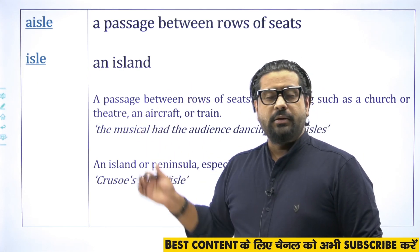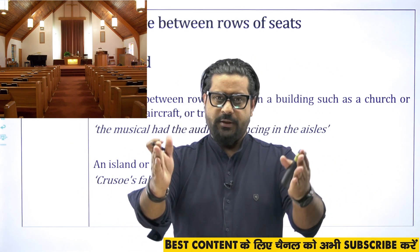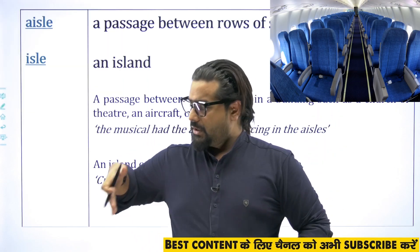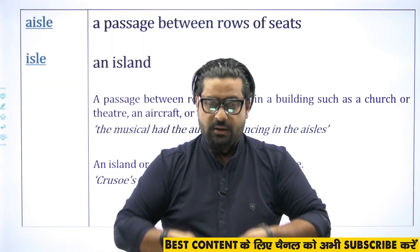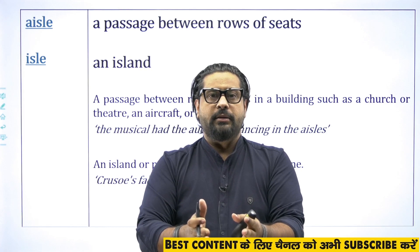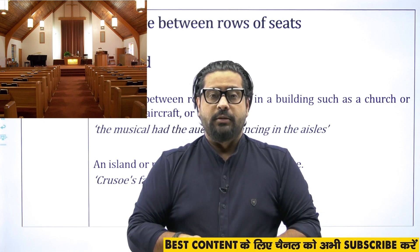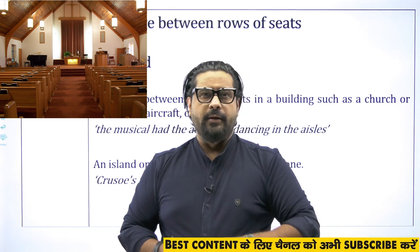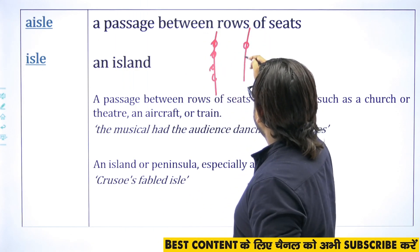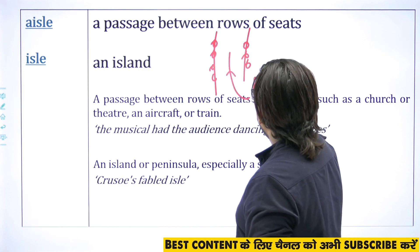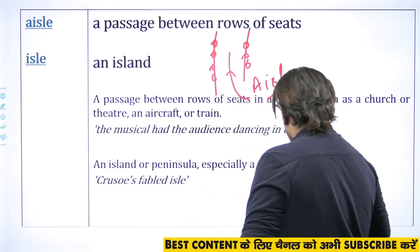Third pair: 'aisle' (A-I-S-L-E) and 'isle' (I-S-L-E). The pronunciation looks similar but the meaning and spelling are different. 'Aisle' is what you see in a church or on a plane — there are seats on either side and in the middle there is a passage, a walkway. That passage between the rows of seats is called an 'aisle.' We pronounce it as 'eye-ul.'